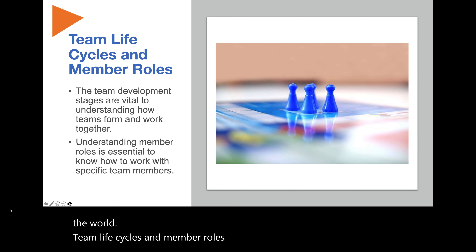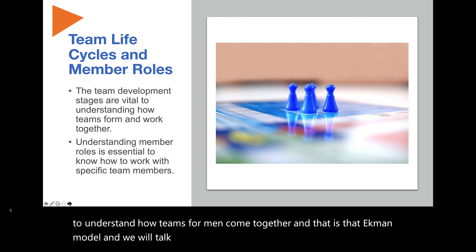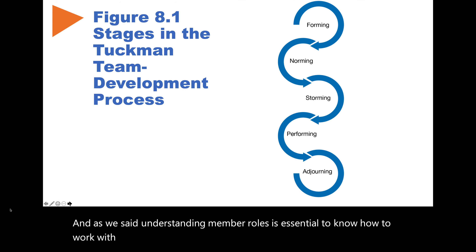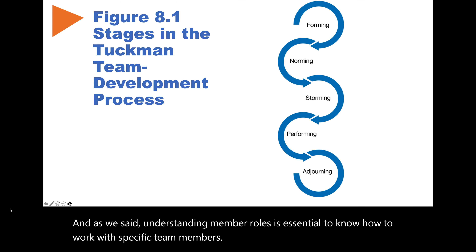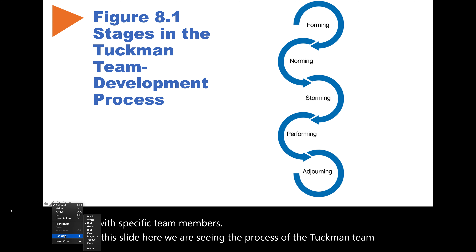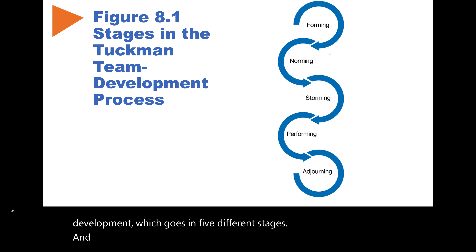So, team life cycles and member roles. The team development stages are vital to understand how teams form and come together — that is the Tuckman model, which we will talk about next. Understanding member roles is essential to know how to work with specific team members. On this slide, we are seeing the Tuckman team development process, which goes in five different stages, and it is figure one in the textbook.